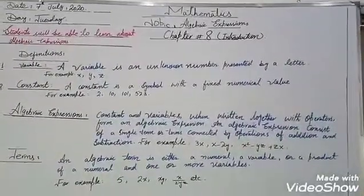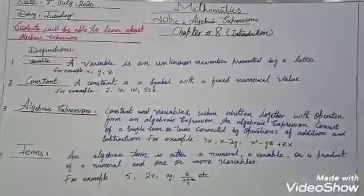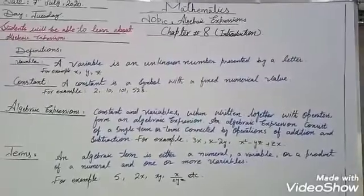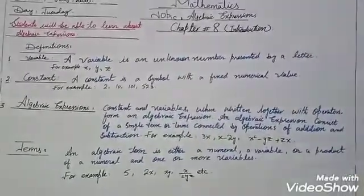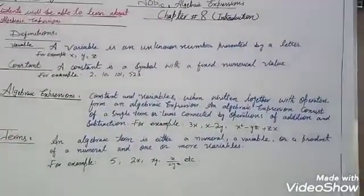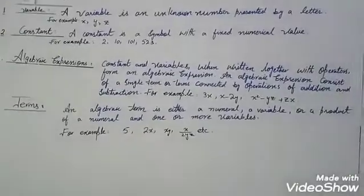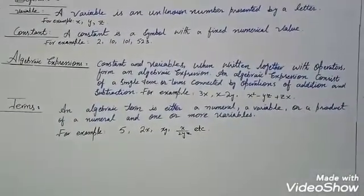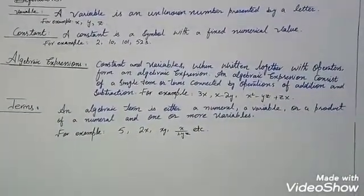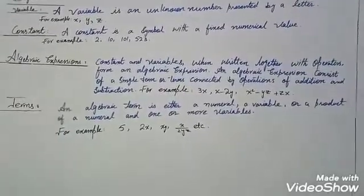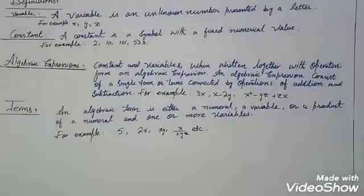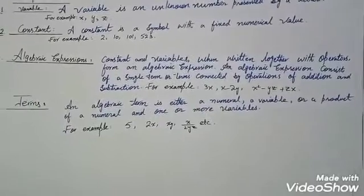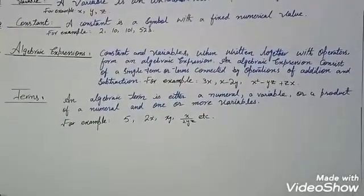Today we will do chapter number 8, topic: algebraic expression definitions. The first definition is variable. A variable is an unknown number represented by a letter. For example, x, y, z — these are variables.